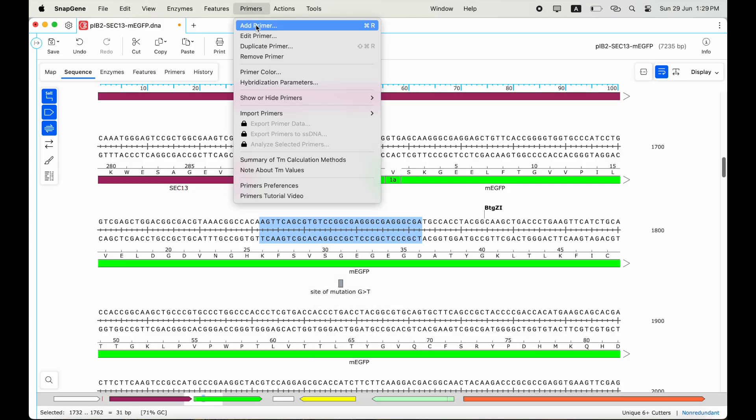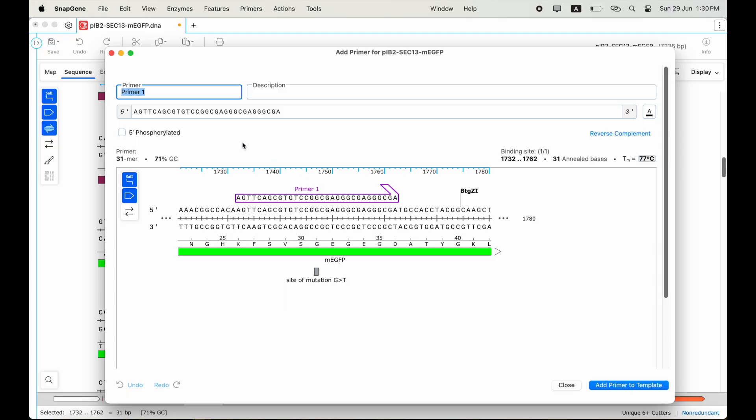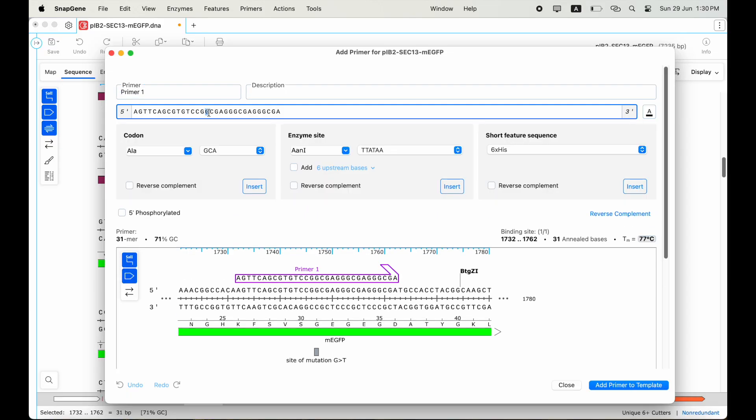Next, I will create new primer by going to primers, add primer, and I will start by creating a primer using the top strand first. I now need to change the G allele to a T allele, my intended mutation. Notice how the new base is mismatched.